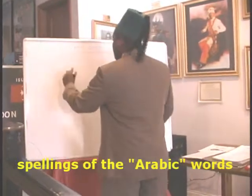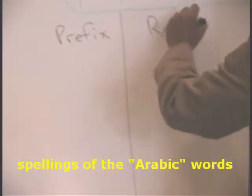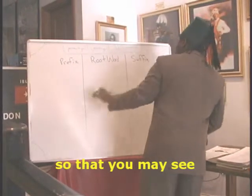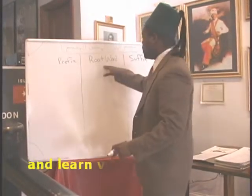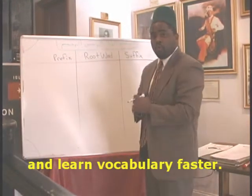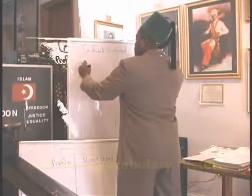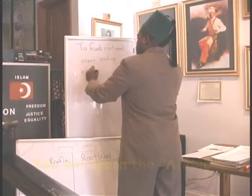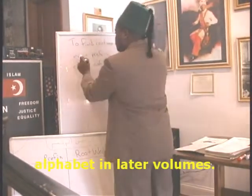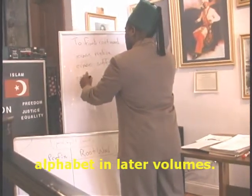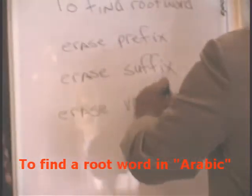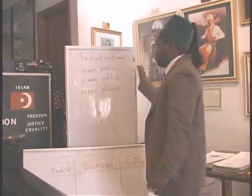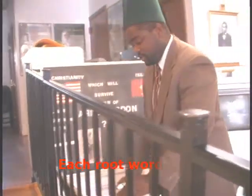The root word system — we're going to take it and say the root word. Now, in order to find the root word in any Arabic word, you must erase the prefix, erase the suffix, and erase the vowels. So the final root word in Arabic: you erase the prefix, the suffix, and the vowels, and then you'll have your root. What we're going to do is do a few words and test that out.